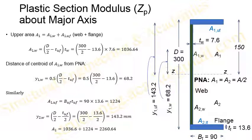This gives us a web area A1w of 1036.64 mm². All dimensions in this video are in millimeters by default. The distance of the centroid of A1w, the web segment in the upper area, is taken at the mid-height of that segment due to uniformity. So that is 0.5 × (d/2 − t_uf), which comes out to be 68.2 mm.